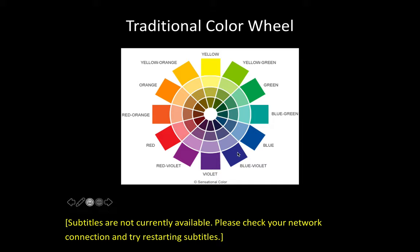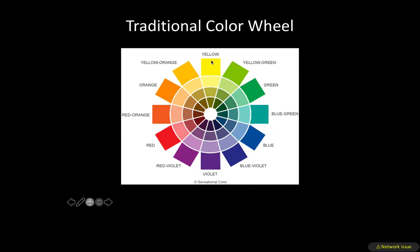We're basing this off of the idea that we've got a traditional color wheel. The primary colors on the color wheel are yellow, red, and blue. The secondary colors are green, orange, and violet.